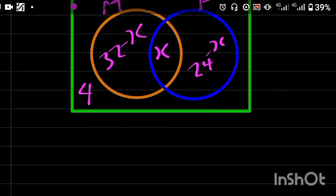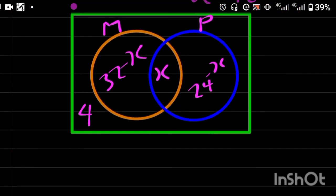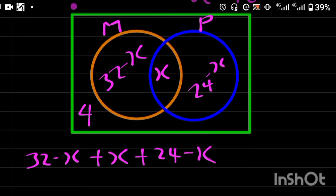So summation of everything inside the universal set must be equal to the universal set, which is 40. Therefore, I have 32 minus X plus X plus 24 minus X plus 4 is equal to 40.